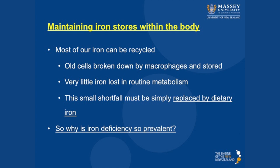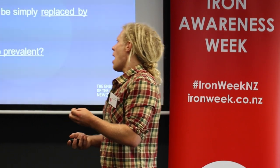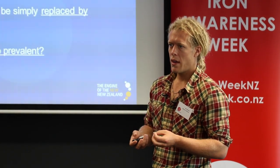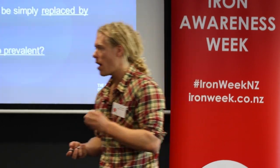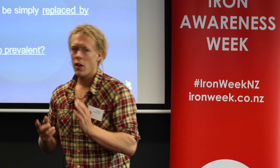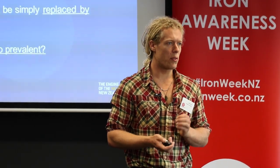We've got iron in our body, and our body is actually very good at recycling that iron. When our red blood cells become old — become senescent — they are broken down by macrophages and that iron is recycled. This process is actually quite efficient: about 10% of our body's iron is lost and 90% is recovered. So we're actually very good at recycling our iron. This little bit of iron that is lost has to be replaced by dietary iron sources.